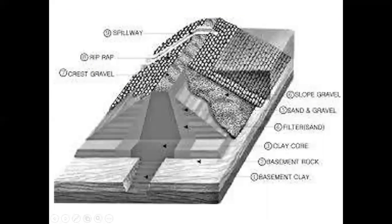This image shows the view of an earthen embankment cross-section. Here is the top width of the dam, the spillway, and riprap or stone pitching provided to protect from erosion. Slope gravel and sand gravel material is used. A filter is generally used to remove seepage water from the embankment. Here is the clay zone to intercept the seepage line within the embankment and form a core in the earthen embankment zone.